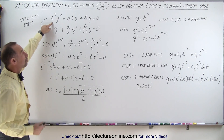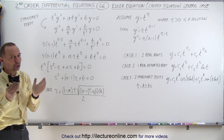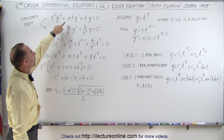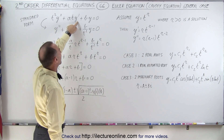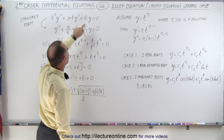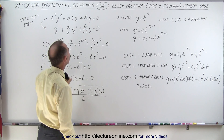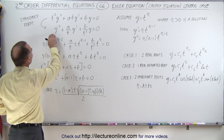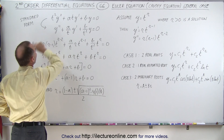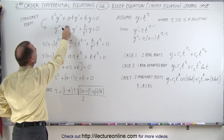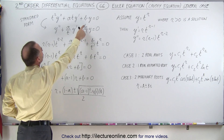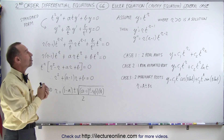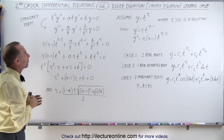Here we have a homogeneous equation — we're only doing the homogeneous part here. The general form is t squared y double prime plus a times t y prime plus b times y, where a and b are simply constants, set equal to zero. We then convert that to standard form by dividing everything by the coefficient of y double prime, which gives us y double prime plus a over t times y prime plus b over t squared times y. When you see an equation in that form, we use the Euler equation method.